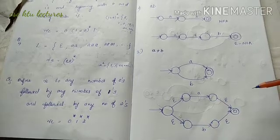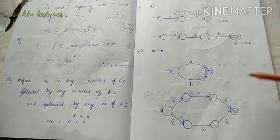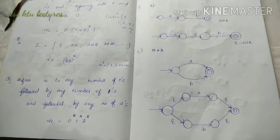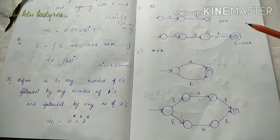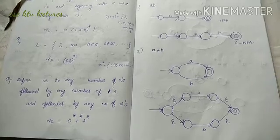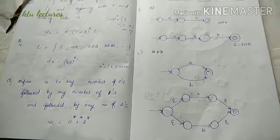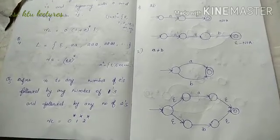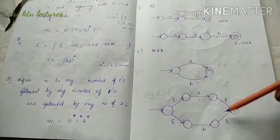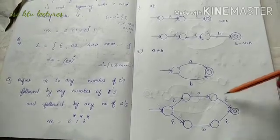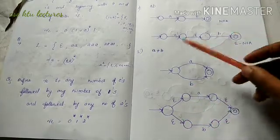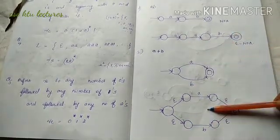Now we will draw the basic terms. We will write the terms: A plus B, and A-star. We will write the term equal to NFA and recreate this character.